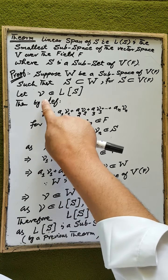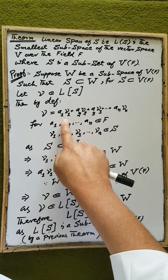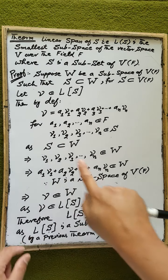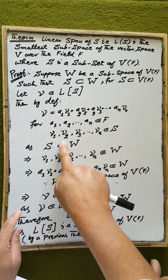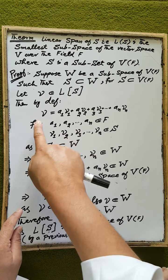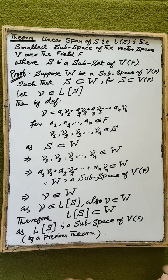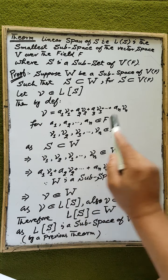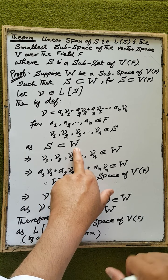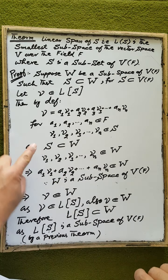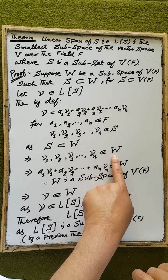Then any vector V spanned by the set S can be written as a linear combination of elements of S. That is, V1, V2, up to Vn are elements of the set S such that A1·V1 + A2·V2 + ... + An·Vn gives a vector V in Span(S), where A1, A2, up to An are scalars. Since S is a subset of the subspace W, each element V1, V2, up to Vn of S is also an element of W.